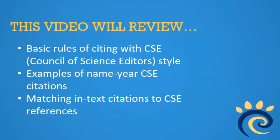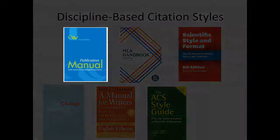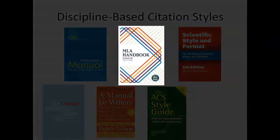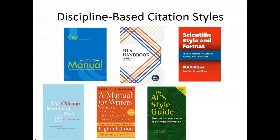When you cite sources as a college student, you'll be using a specific citation style. There are a variety of citation styles out there, and different disciplines use different citation styles. For example, the discipline of psychology uses the APA style, English and the humanities use the MLA style, and the discipline of biology uses the CSE style. Be sure to ask your instructors which style they prefer you use.